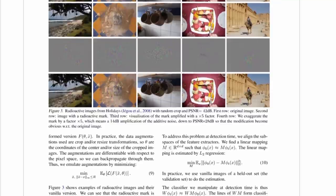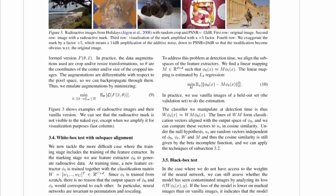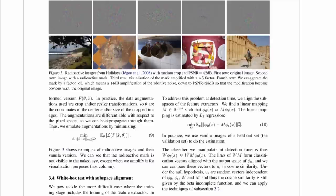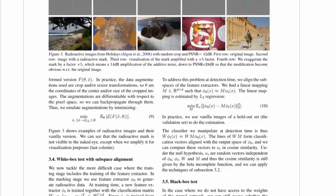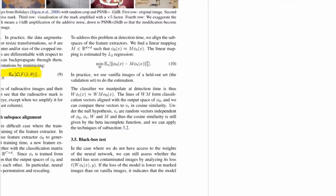This paper says nothing about defenses — these markings can probably be defended against fairly easily with something like Gaussian blur, though this gets into the same discussion as adversarial examples. The question is whether you can detect in the final classifier whether someone has smuggled radioactive data into your training process. There are also better ways to radioactively mark — this is kind of an establishing paper doing the most basic thing.